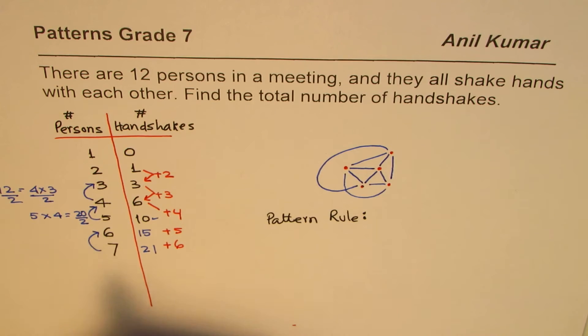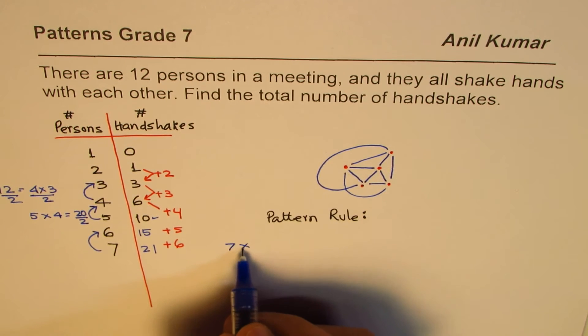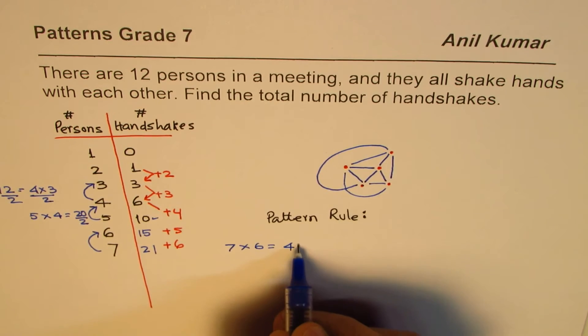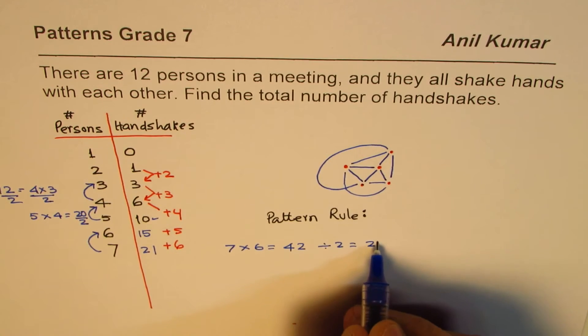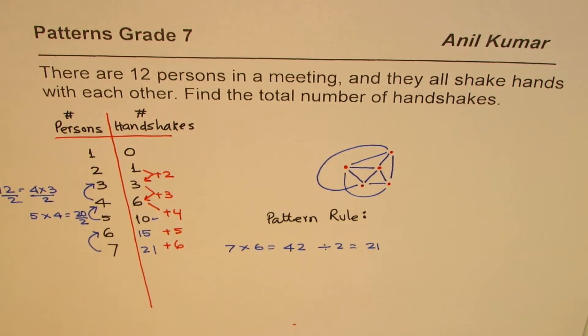Let's try with 6 and 7. So we are doing 7 times 6. Let me do it here. So 7 times 6 is 42, and when you divide this by 2, you get 21. So it works. That means for 8 persons, the number should be 8 times 7, which is 56, then divide by 2, which is 28.